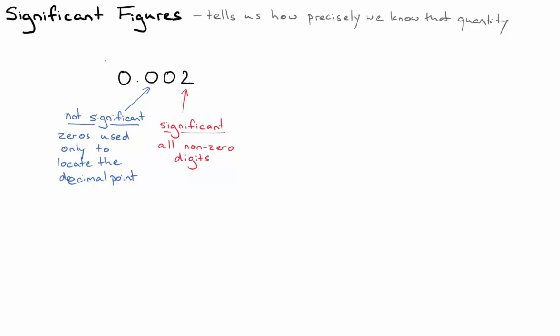And again, this zero over here is not significant. It's kind of only there for cosmetic purposes. It's a zero that doesn't give us any information about how we know the number, how well we know the number. So this number, as it stands, has one significant figure. Only one of those digits tells us something about how well we know that quantity.